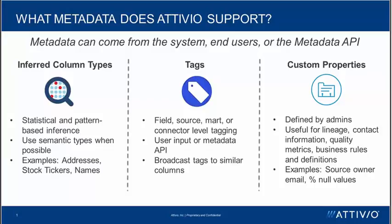The metadata API built into the catalog enables bi-directional syncing with other metadata tools and repositories. There's also a neat functionality around tags called broadcasting tags, which we'll see in the demo. This allows you to propagate a tag onto other similar columns within the catalog.